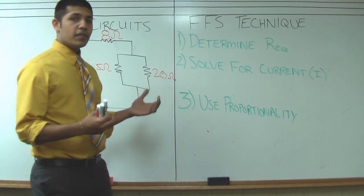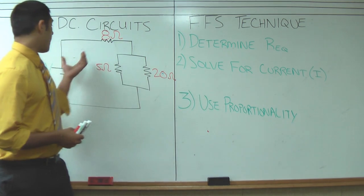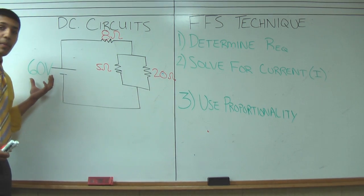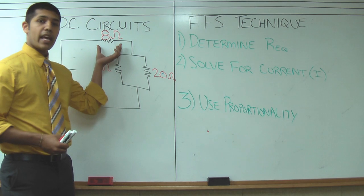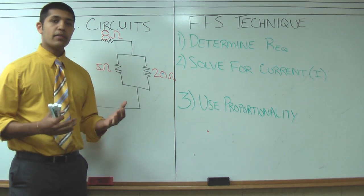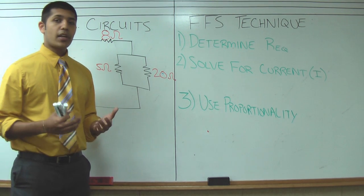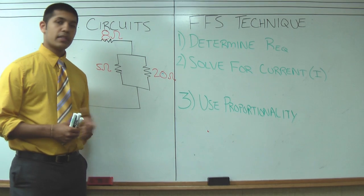Alright, so once you've determined all your necessary components for your circuit, like your battery, a 60 volt battery, your resistors, you have an 8 ohm resistor, a 5 ohm resistor, and a 20 ohm resistor. Alright, so now we're going to try to determine the current through the circuit and then maybe how the current splits up through the parallel resistors.